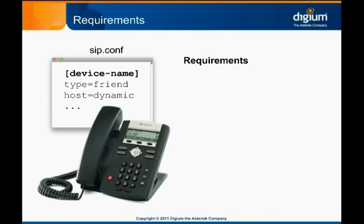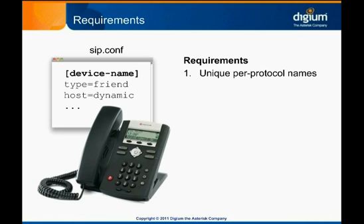There are three primary requirements Asterisk will enforce when it comes to device naming. First, device names in Asterisk need to be unique on each Asterisk system for each protocol. You can use the same device name on more than one Asterisk server, but each server can only use a particular device name once per protocol. If you try to use the same device name more than once on the same system, Asterisk will treat both entries as referring to a single device and may not behave in the way you expect. This means you could use a device name of "trunk" in both sip.conf and iax.conf and they would refer to different devices. However, if you try to specify two devices named "trunk" in sip.conf, Asterisk will treat both instances as referring to the same actual device.